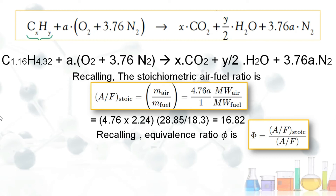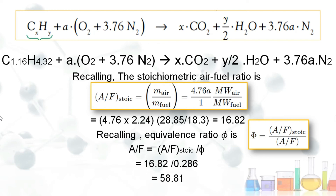We know (A/F)_stoich = 16.82 and φ = 0.286. Applying these values, the actual air-fuel ratio (A/F) = 16.82 / 0.286 = 58.81. This is one of our required answers.